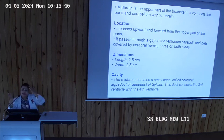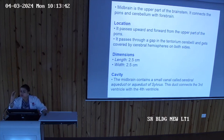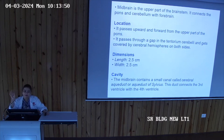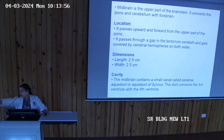The midbrain is very small — it is the smallest part. Its dimensions: the length is almost 2.5 cm and the width is also 2.5 cm. So it has almost the same length and width.